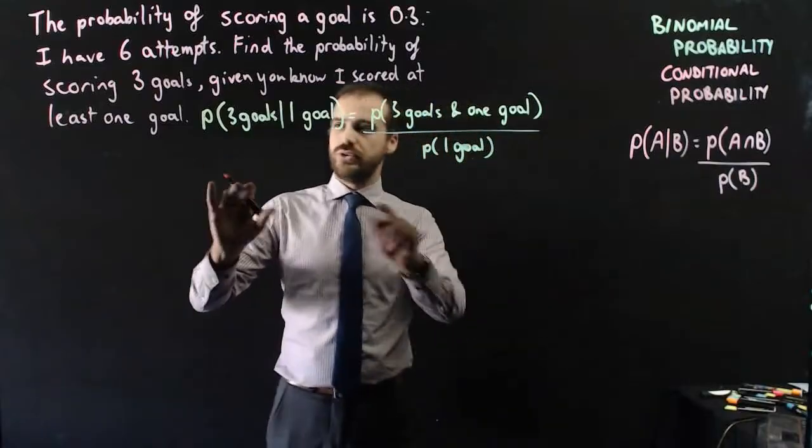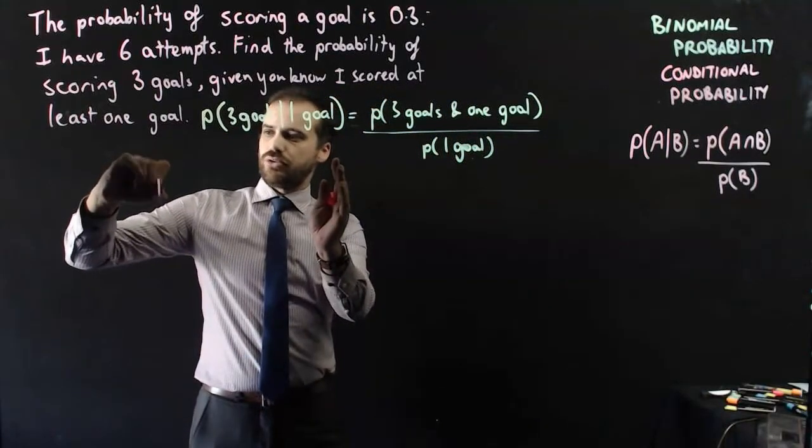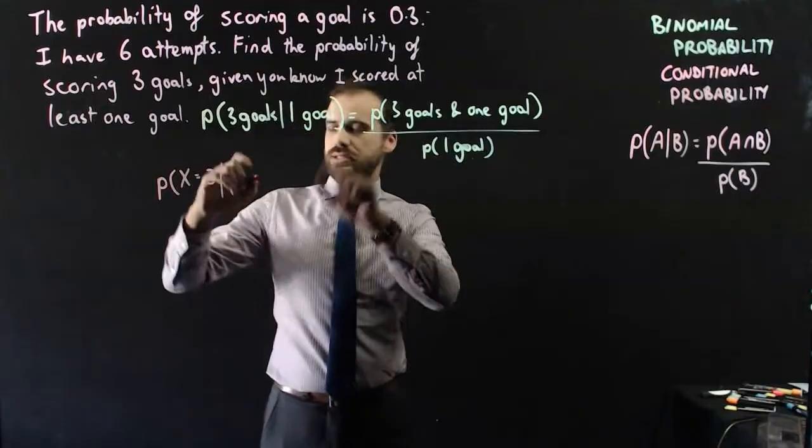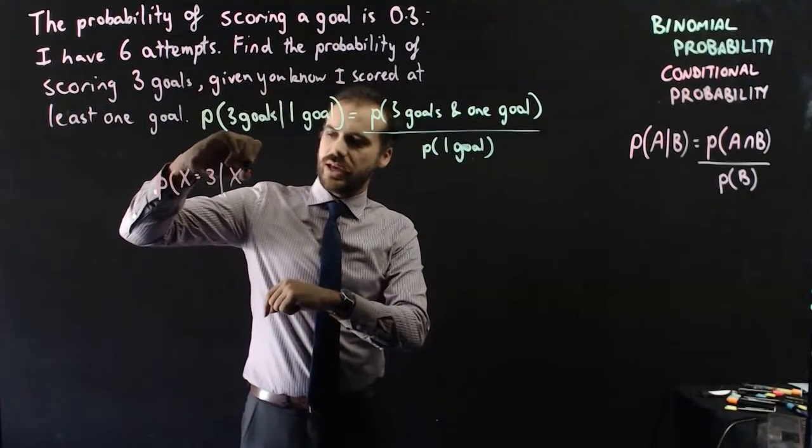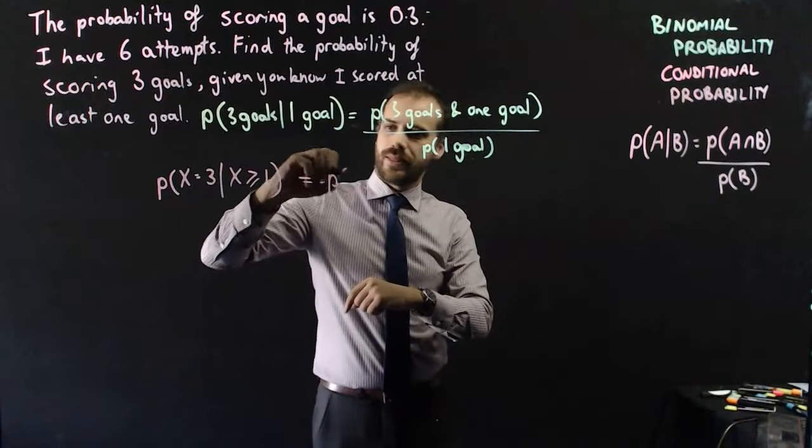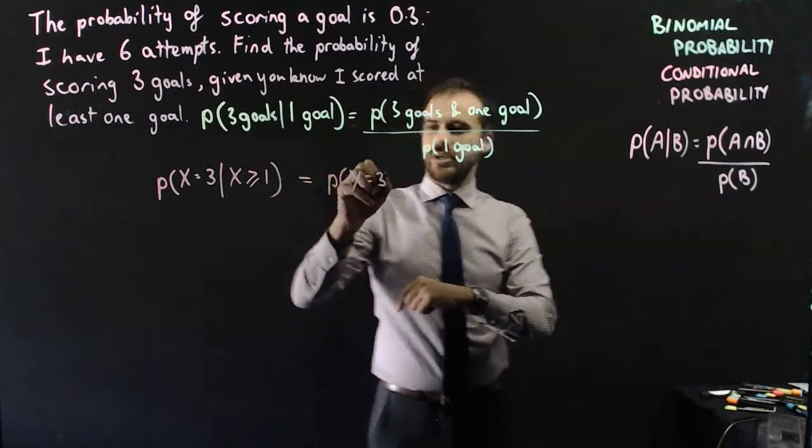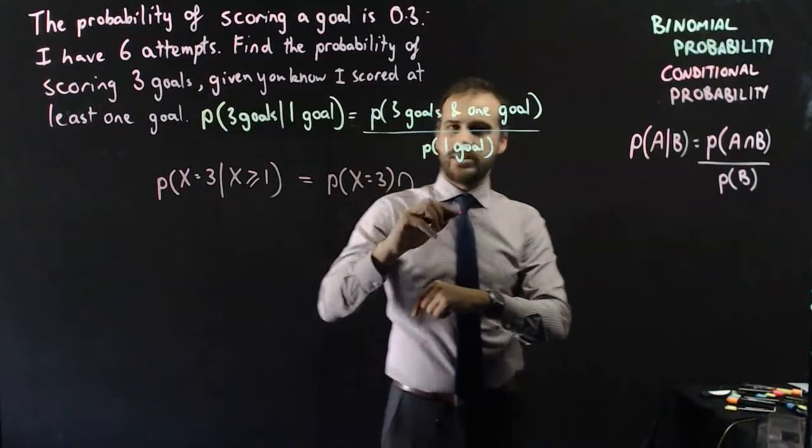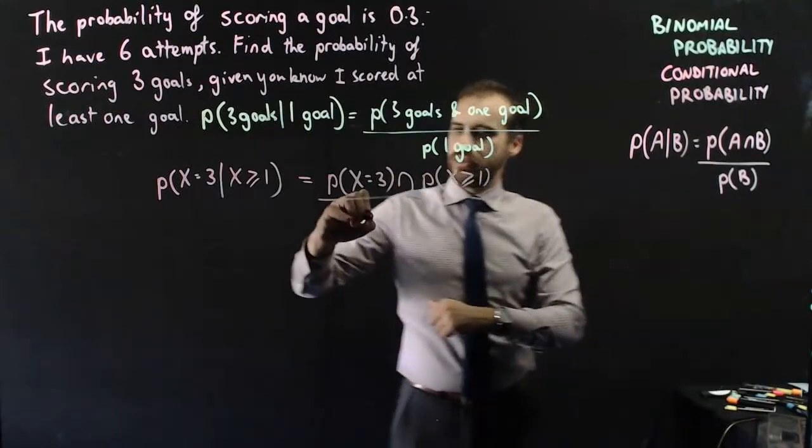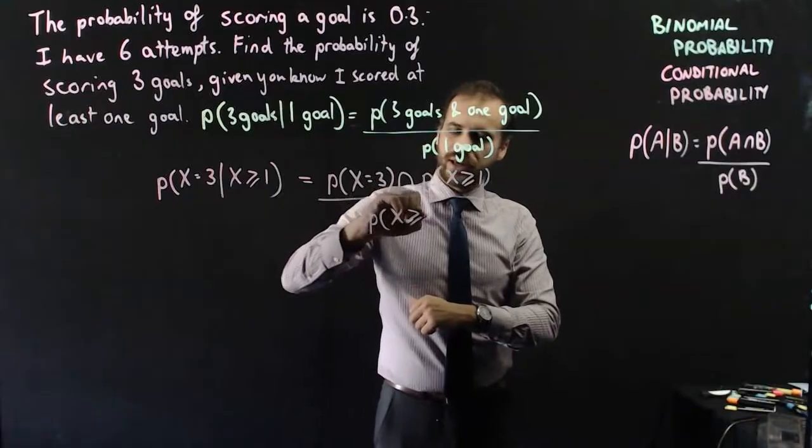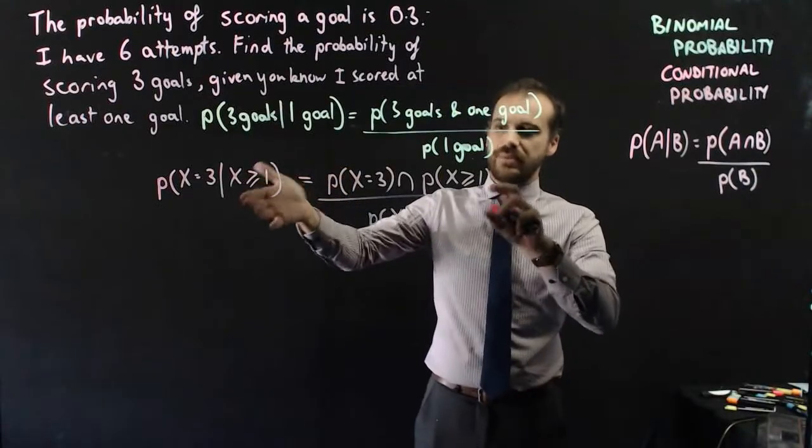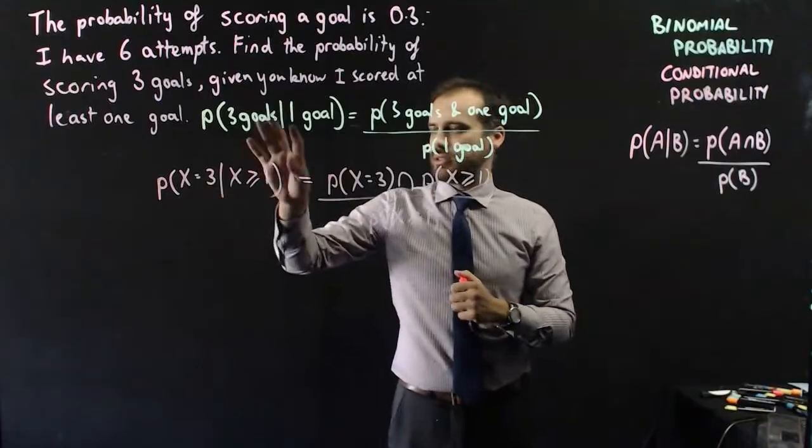Now this is the bit where it gets confusing. I'm going to do this bit first. The probability that X is equal to three, given X is greater than or equal to one, intersection, probability that X is greater than or equal to one, over the probability that X is greater than or equal to one. Okay, so I know that that feels confusing, but I've written the same thing, exactly the same thing, just slightly differently.